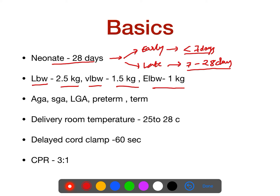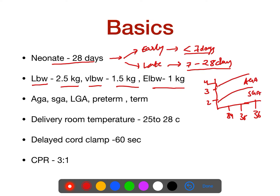Based on gestational age and weight assessment using the WHO growth chart, they will ask what is AGA, SGA, and LGA. Those babies whose weight is between the 10th to 90th centile is AGA — appropriate for gestational age. Those having less than the 10th centile is small for gestational age, and more than the 90th centile is large for gestational age.